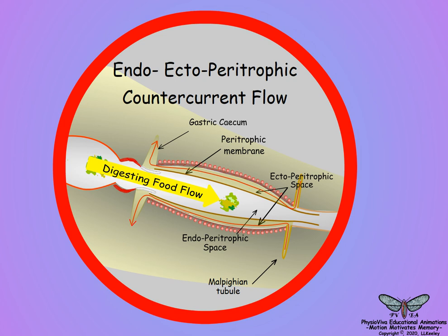Because the peritrophic membrane can act as a molecular filter, some large enzymes may be restricted to the ecto-paratrophic space. Smaller enzymes enter the endo-paratrophic space and break food polymers into smaller oligomers.